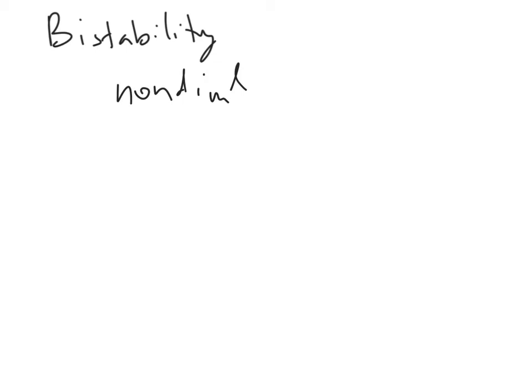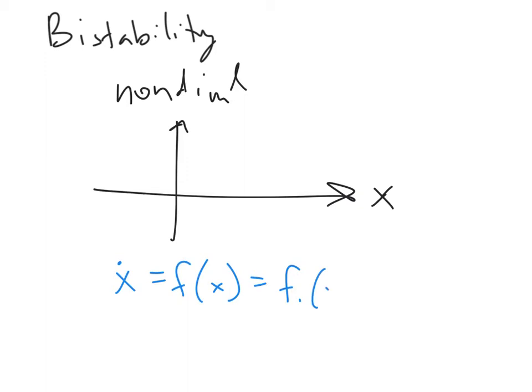We've seen some scenarios of what happens with parametric variation, and the most common one is, let's say I have x dot equals f of x equals f₁ of x minus f₂ of x. So maybe here's f₁ of x, and here's f₂ of x, and there's a parameter that's shifting f₂ in this direction. So we can think about what happens as we change that parameter.